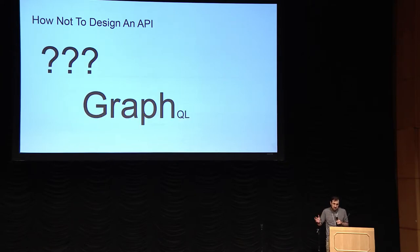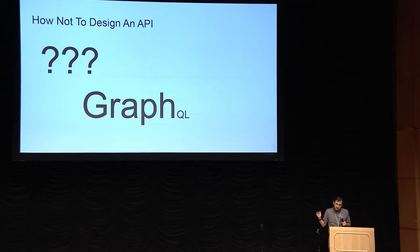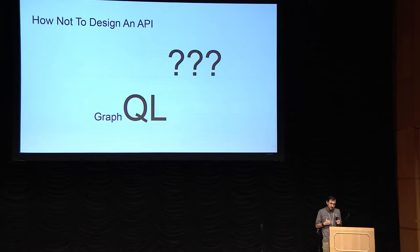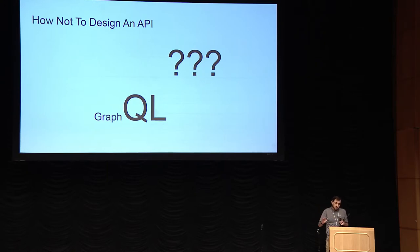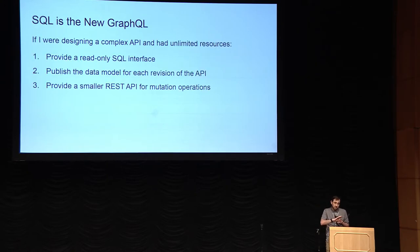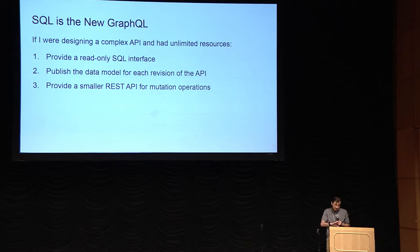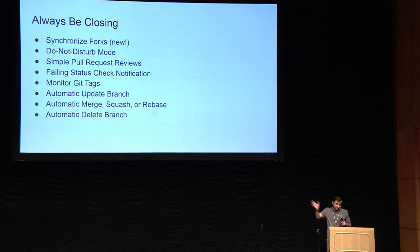GraphQL puzzles me. It's not purely graph — there are only specific entities you can enter and specific relationships you can traverse. It's also not a general-purpose query language; I end up having to do filters and transformations on my side, so I don't get the power of it. If I had infinite time and money and the ear of powerful people, I would publish a read-only SQL interface, publish the data model since I can infer it from the GraphQL anyway, and then provide a smaller REST API for mutations. But practically speaking, use the GraphQL API because it's more powerful for GitHub.